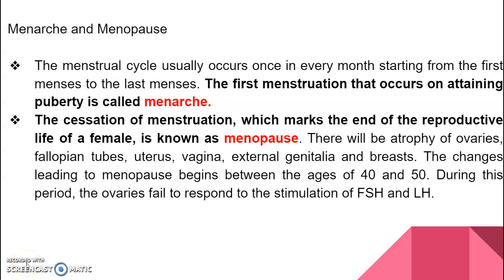We will be discussing two terms: menarche and menopause. The menstrual cycle usually occurs once every month. The first menstruation that occurs at the attaining of puberty is called menarche. The last menses, where there is a cessation of menstruation marking the end of the reproductive cycle in a female, is called menopause.